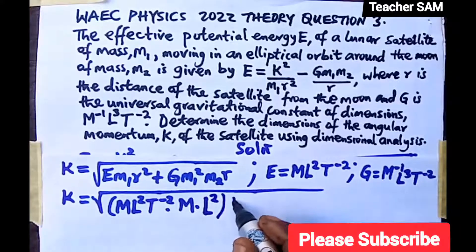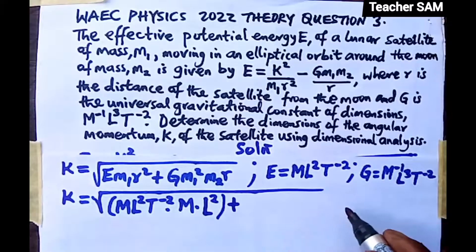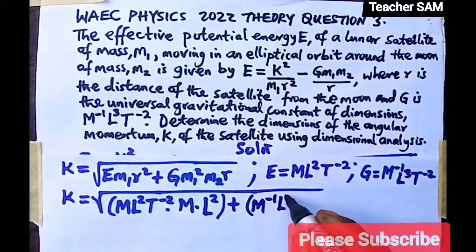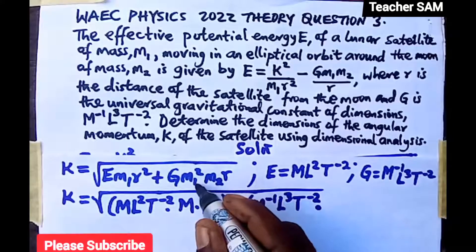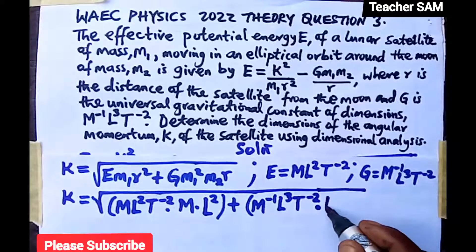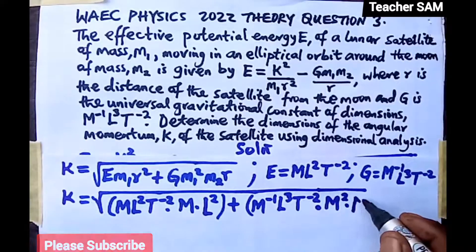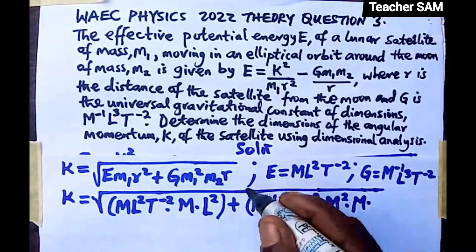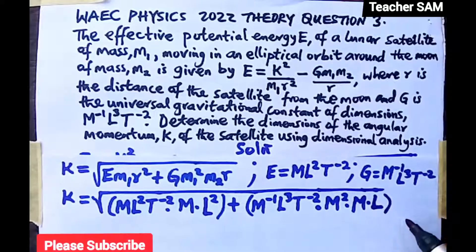For the second term, G has dimensions [M⁻¹·L³·T⁻²] as given. M1² contributes M², M2 contributes M, and R contributes L. Combining: M⁻¹·L³·T⁻² × M² × M × L = M^(−1+2+1)·L^(3+1)·T⁻² = M²·L⁴·T⁻².